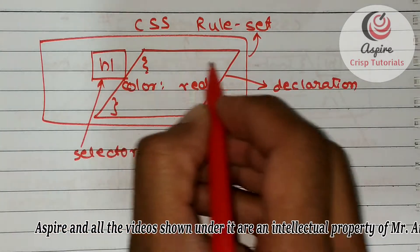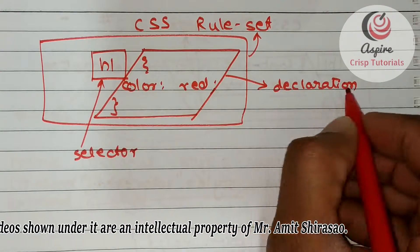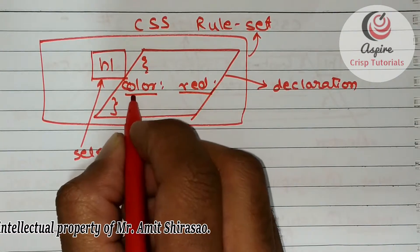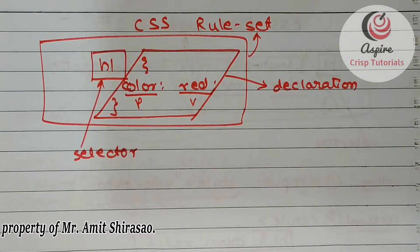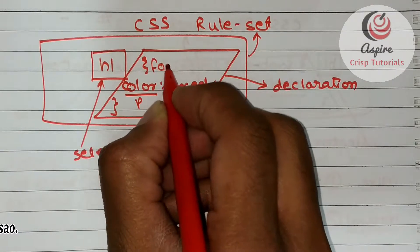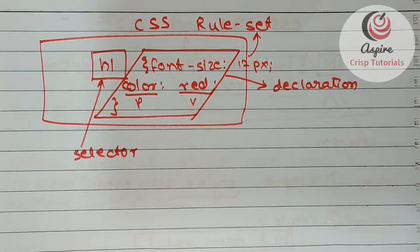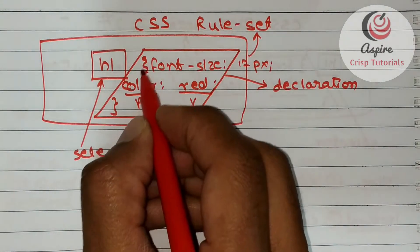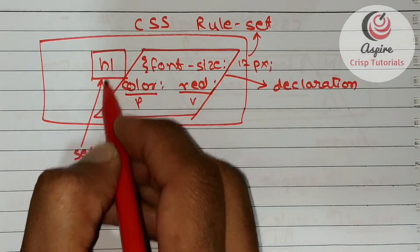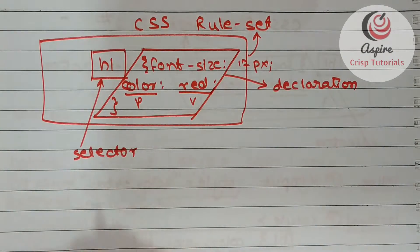Now as you might have guessed, declaration, like any other JSON, is made up of a series of property-value pairs. There can be multiple property-value pairs. Like here you could have written font-size: 12 pixel. So all of these together form one declaration, and declaration plus selector is together called a CSS ruleset. Now where all can you use a CSS ruleset?